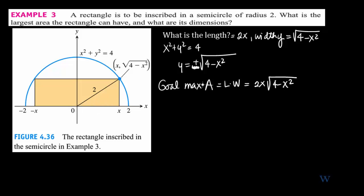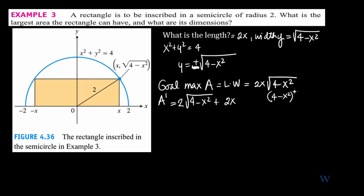Let's take the first derivative, A prime. We have two functions multiplied together: 2x and the square root of 4 minus x². Using the product rule, the derivative starts as 2 times the square root of 4 minus x², plus 2x times the derivative of (4 minus x²)^(1/2), which is (1/2)(4 minus x²)^(-1/2) times negative 2x.